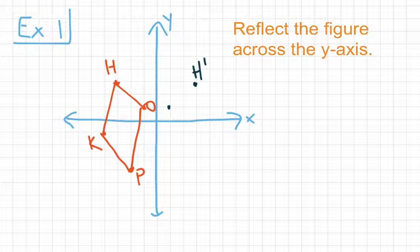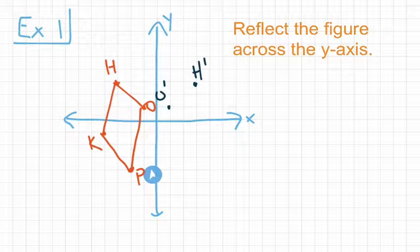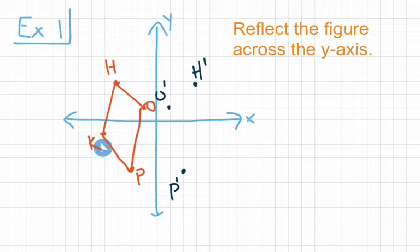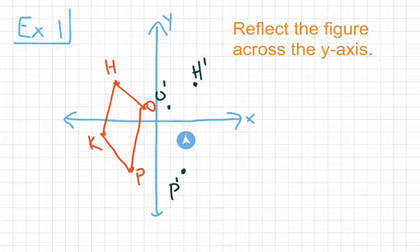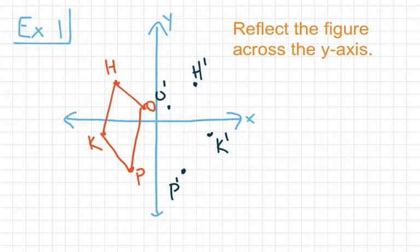We'll put O' right there. Next, let's do point P, which is 2 units away from the y-axis. So P' also has to be 2 units away on the other side of the y-axis. Finally, to find K', we count the distance from K — 4 units to the y-axis — so we mirror that on the other side, counting 4 units again. K' goes right there, 4 units on the other side of the y-axis.